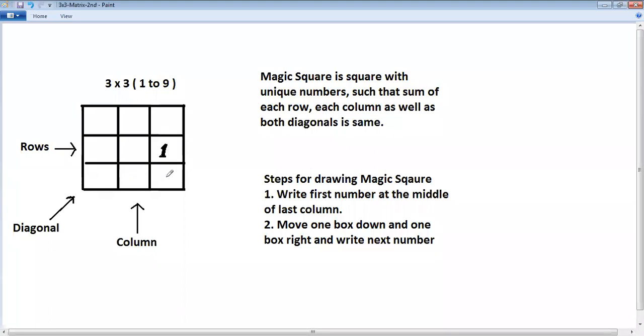Move one box down, one box right and write next number itself. Now here we are reaching out of the box area. So when it goes out the rule says you have to write next number in the first box in corresponding row or column. In this case it is row. First box in corresponding row. Continue down, right. Again out. So in this case first box in corresponding column. So 3 will come here.